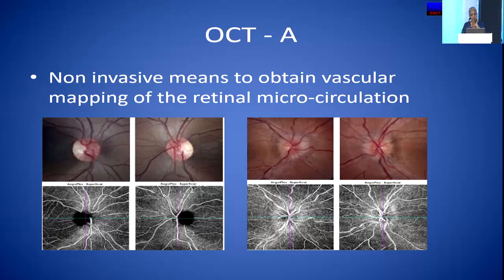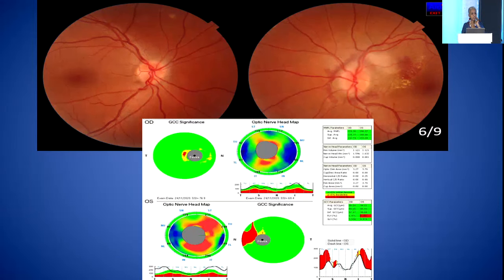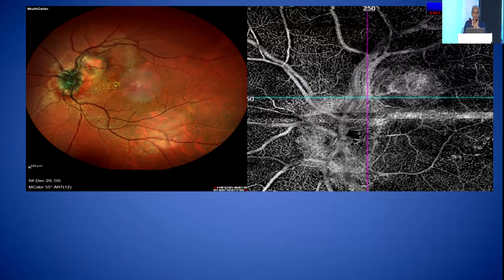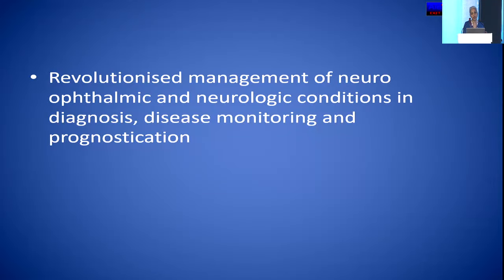OCTA is also extremely helpful in some neuro-ophthalmology conditions. In a patient with chronic IIH whose vision was not improving beyond 6/9, OCTA revealed a frond of new vessels due to a peripapillary CNVM. In conclusion, OCT has revolutionized management of neuro-ophthalmic and neurologic conditions in diagnosis, disease monitoring, and prognostication.